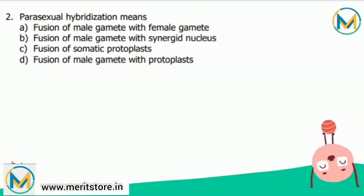Fusion of somatic protoplasts of two plants can be achieved mechanically or by using chemicals called fusogens. Somatic protoplast hybridization is the only way through which two different parental genomes can be recombined among plants that cannot reproduce sexually. The correct answer is option C — fusion of somatic protoplasts.